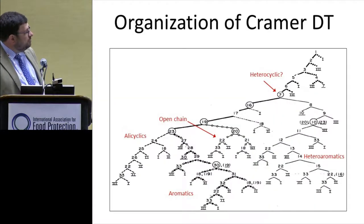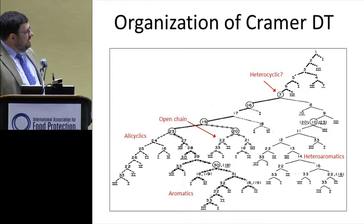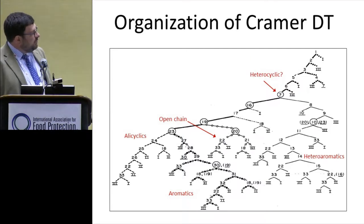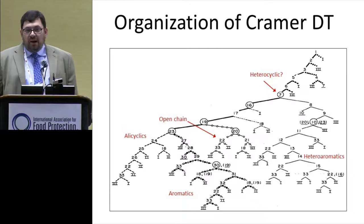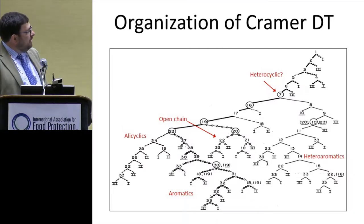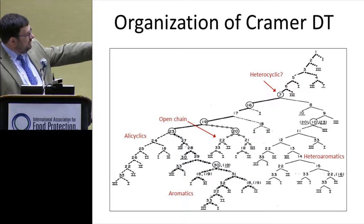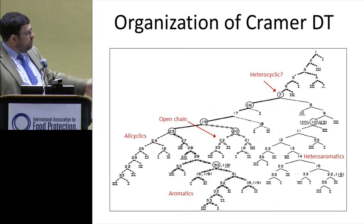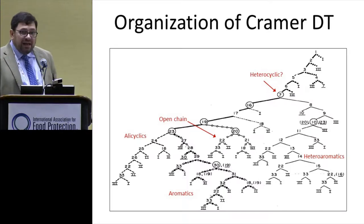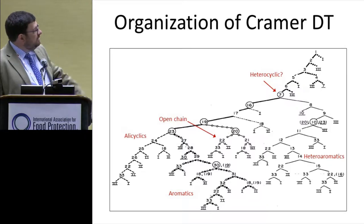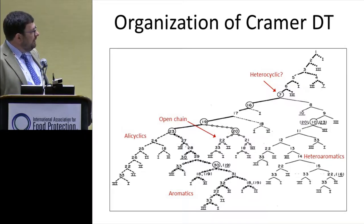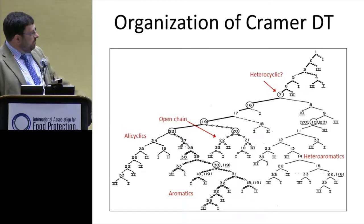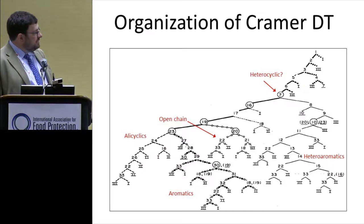This is what the Cramer-Fort Hall Decision Tree looks like. You start at the very top — question one: is it a common component of food? You work down the tree and at different places you come out into Decision Tree Class I, Class II, or Class III. From a chemical perspective, it's organized into different chemical classes, with branches heading towards heterocyclics, open chains, aromatics, heteroaromatics, et cetera.